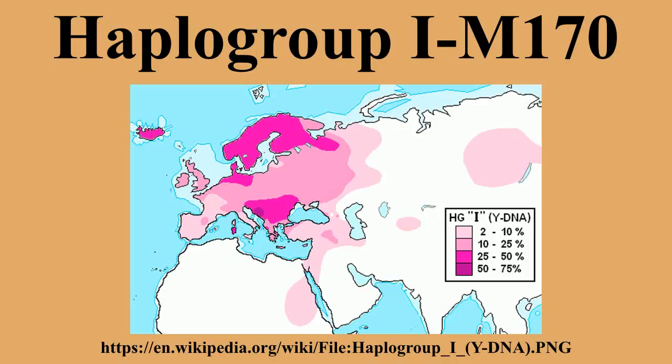Haplogroup IJK, carried by the Cro-Magnons, was moving to Europe from the Middle East between 40,000 and 30,000 years ago. The TMRCA for the clade was estimated by Karafet and colleagues in 2008 as 22.2 ka, with a confidence interval between 15.3 to 30.0 ka, placing the Haplogroup I-M170 founding event approximately contemporaneous with the last glacial maximum, which lasted from 26.5 ka to 19.0 ka. The TMRCA is an estimate of the time of subclade divergence.